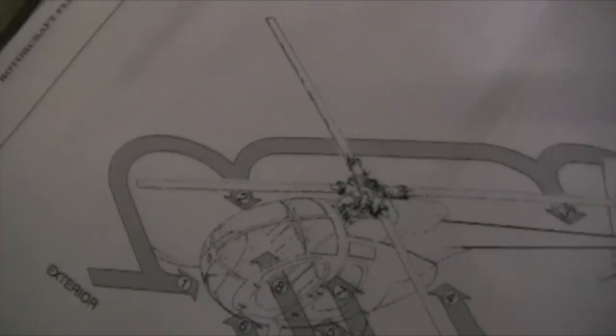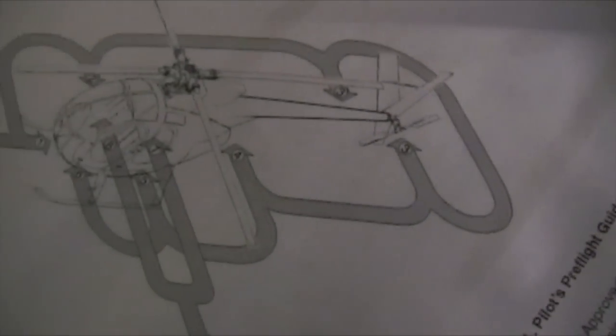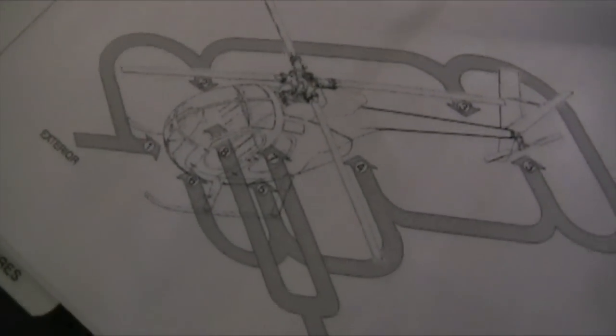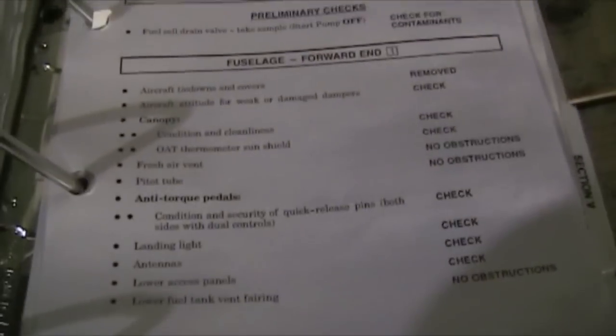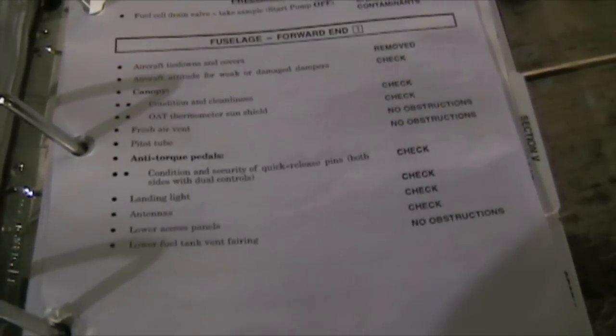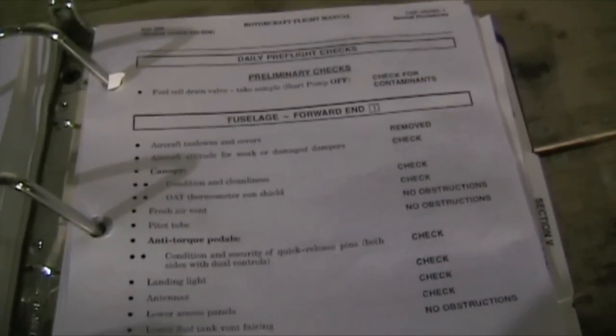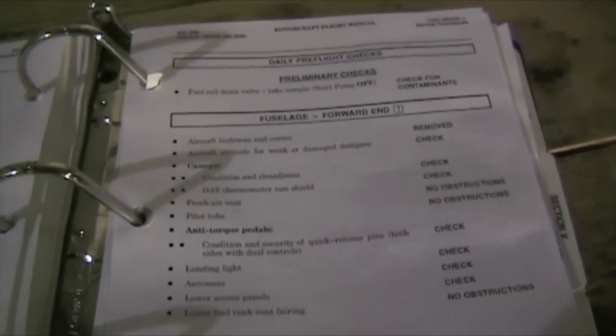4-2 kind of gives you a schematic of how the pre-flight will be started. We start from the front, work our way around the right side, then back around the left side, and up top. Here we're going to do this whole checklist and then recheck it via the checklist to make sure we haven't missed anything. The do and verify method.